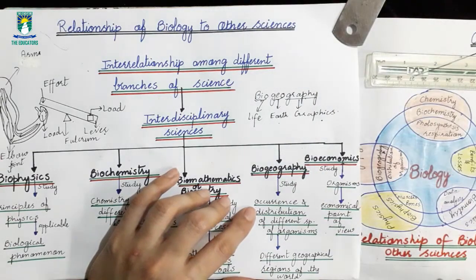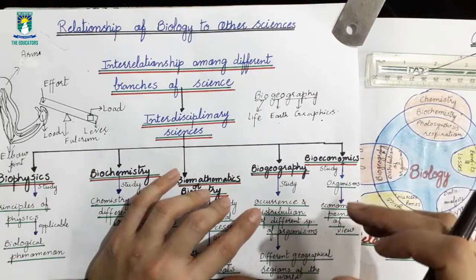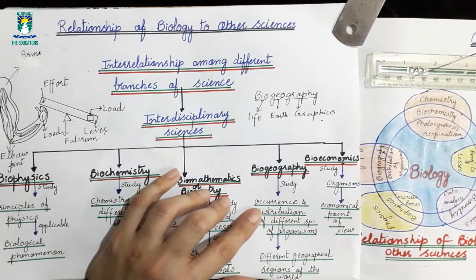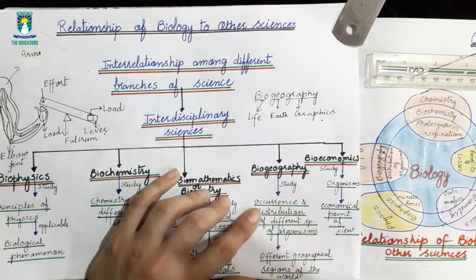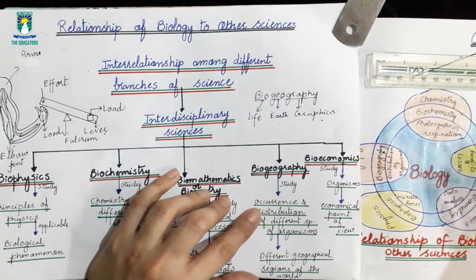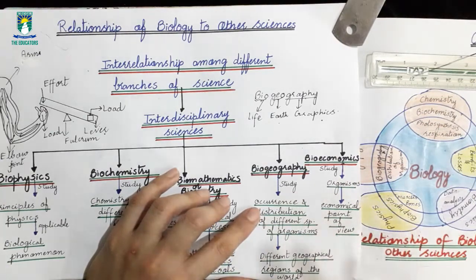Biogeography applies knowledge of the characteristics of particular geographical regions to determine the characteristics of living organisms found there. Basically, geographical conditions like cold or hot regions determine which organisms survive there — those that are adapted to cold regions survive in cold, and those adapted to hot regions survive in hot environments.